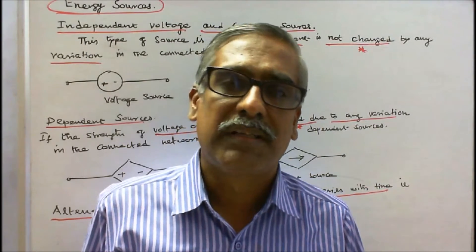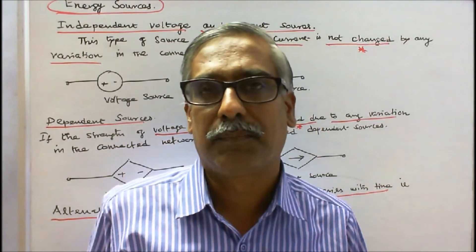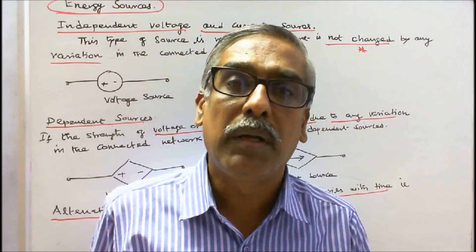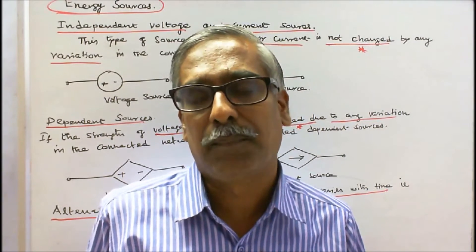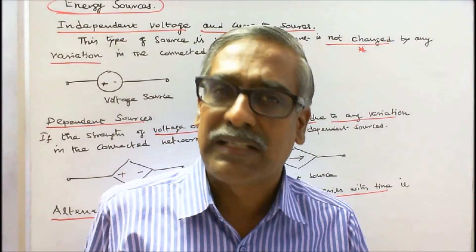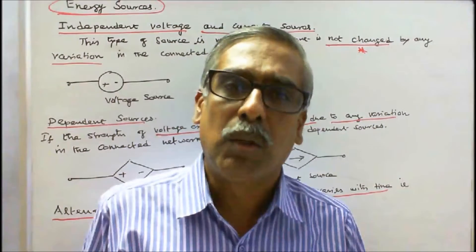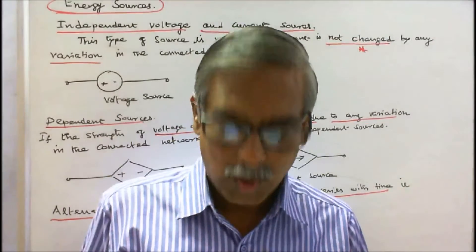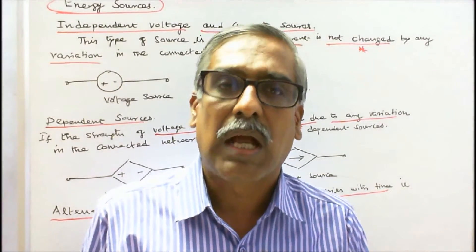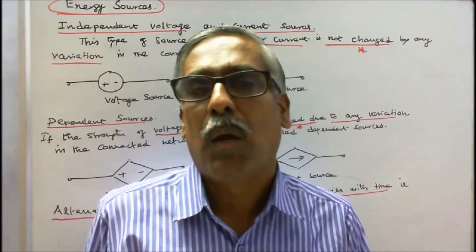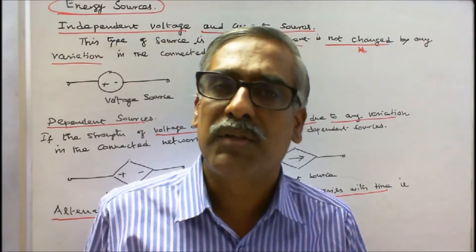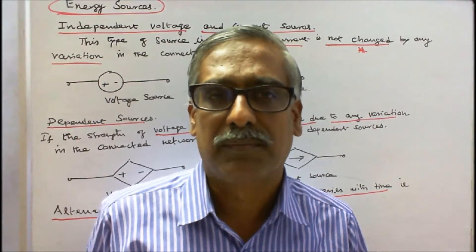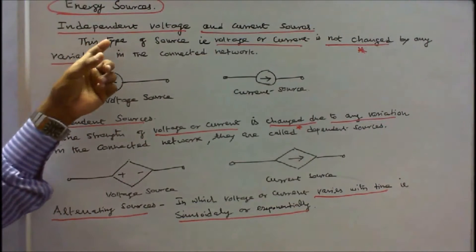In this class we discuss energy sources. Energy sources are broadly classified into two types: independent sources and dependent sources. Dependent sources are again classified as voltage controlled voltage source, current controlled voltage source, voltage controlled current source, and current controlled current source. We will also discuss how to convert a voltage source into a current source and a current source into a voltage source, and work out some problems.